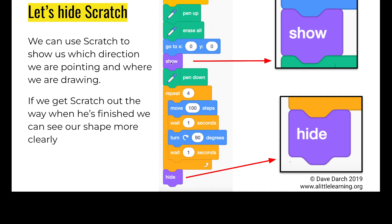So we'll show Scratch so we can see where Scratch is and where we're drawing. But then when we get to the end of our script, we're going to hide Scratch away so we can see our shape without Scratch covering any of it.